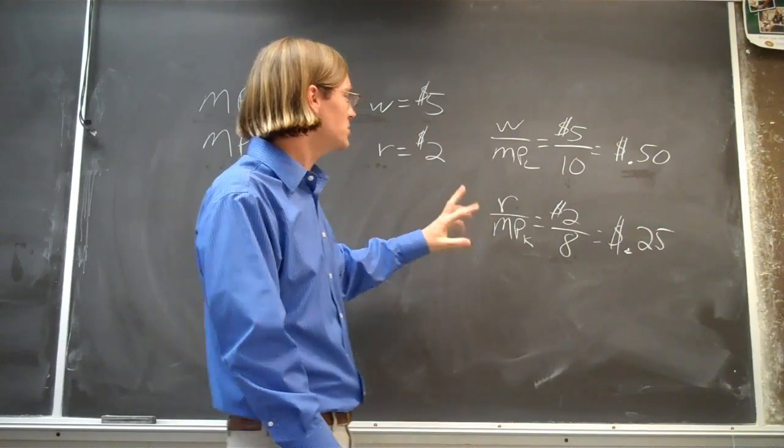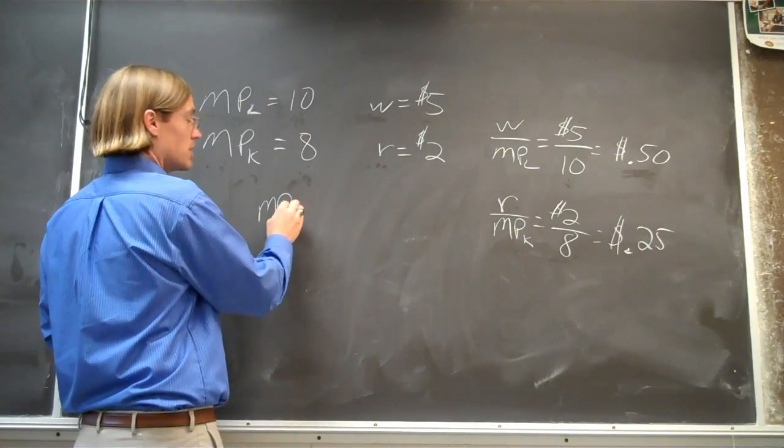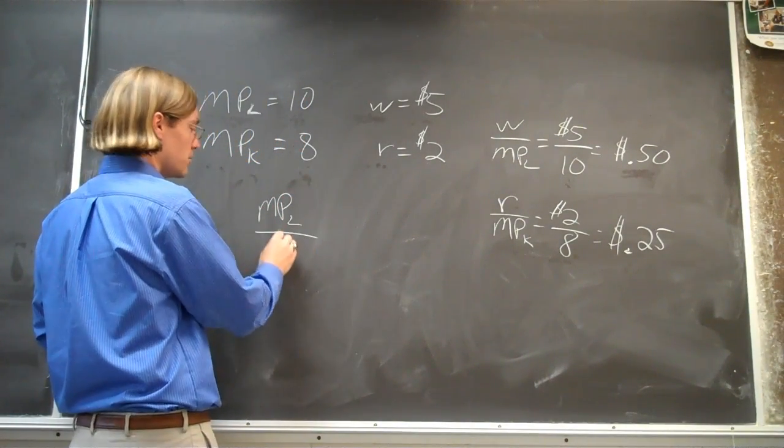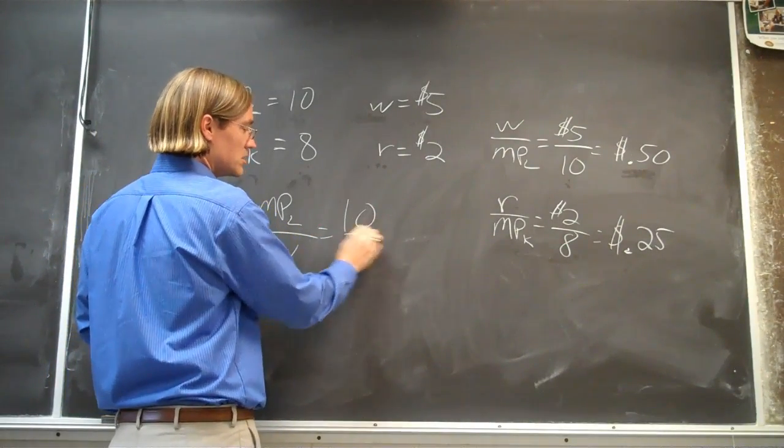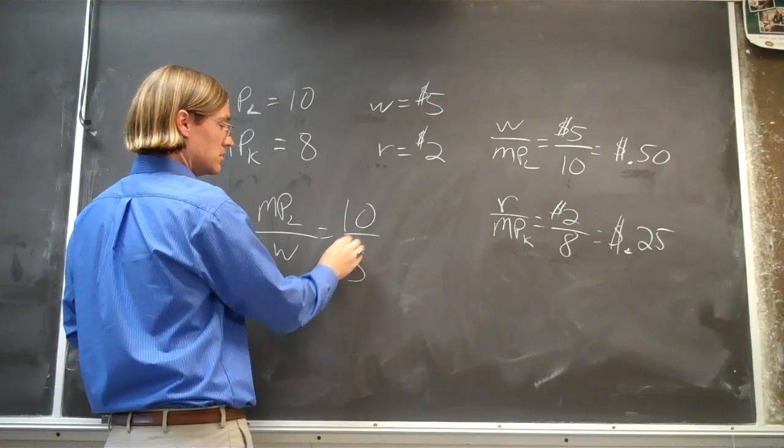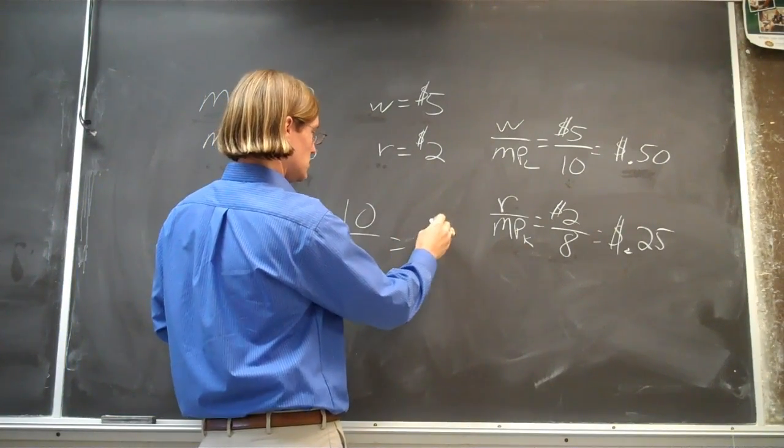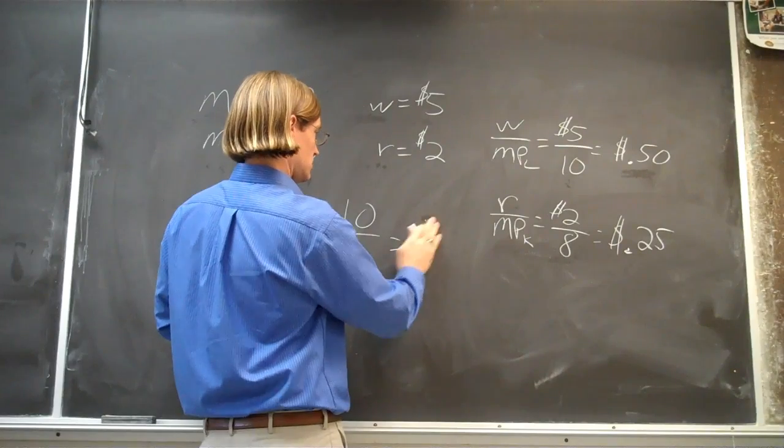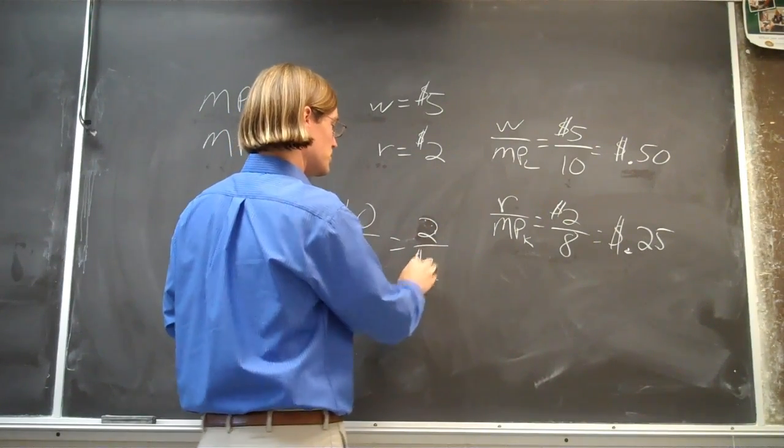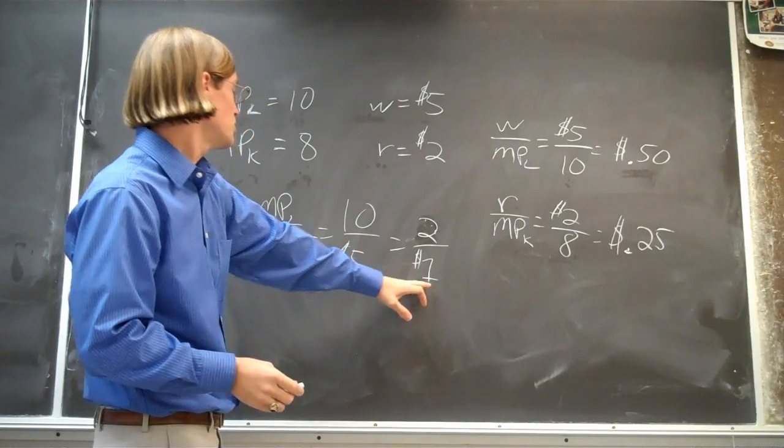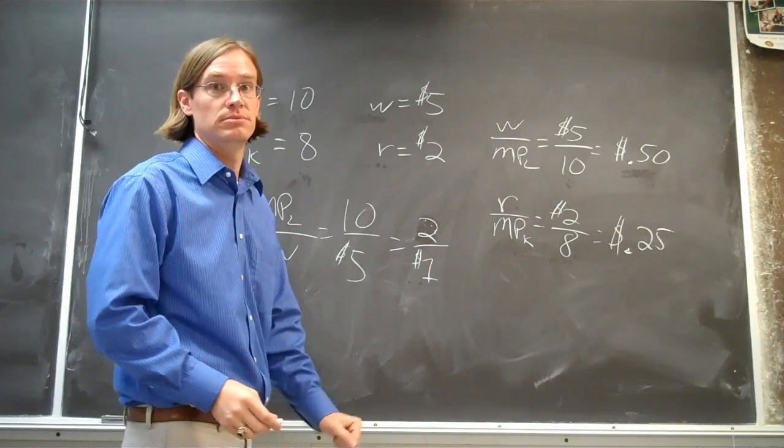They're getting a better deal on the capital. You can also take the reciprocals of these. So if we were to look at the marginal product of labor divided by the wage rate, this means that we're getting 10 units of output for $5, reduce this down to 2 units per dollar. And this says that whenever you put a dollar into labor, you're getting 2 units of output.